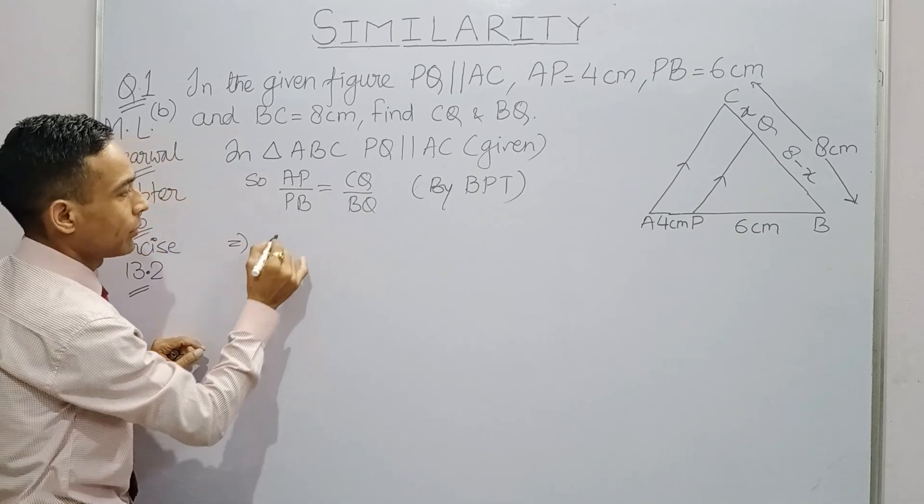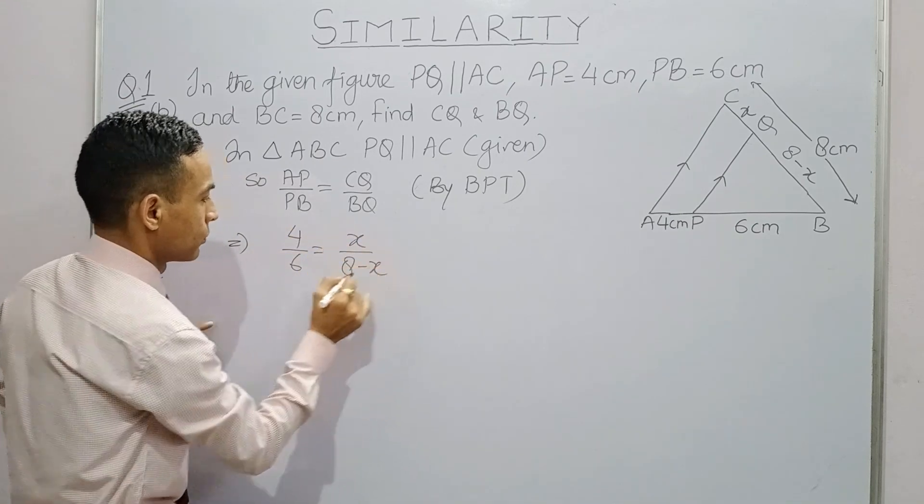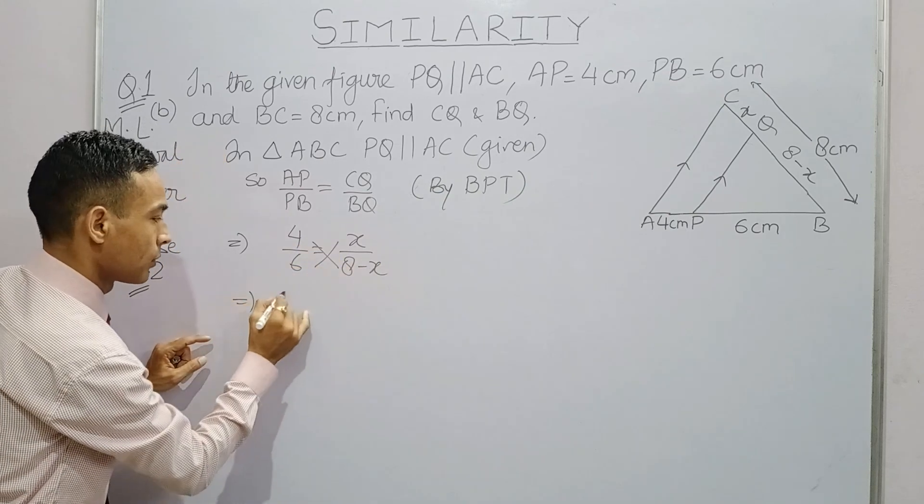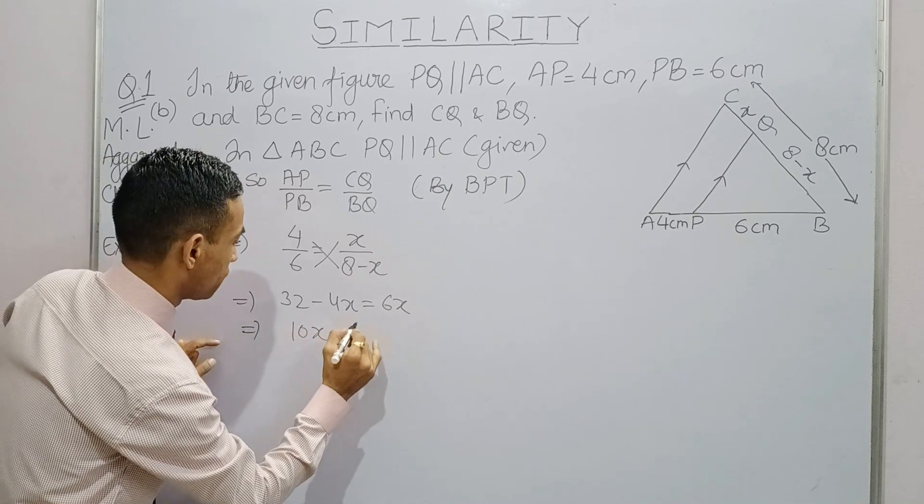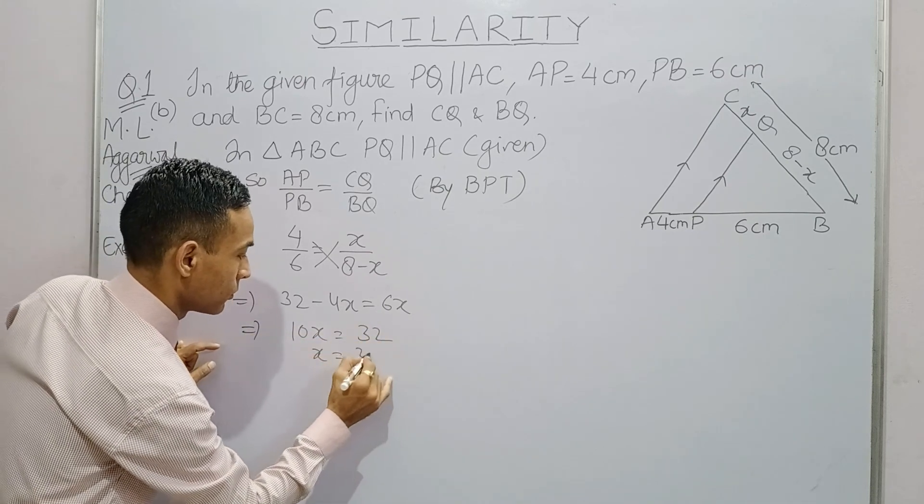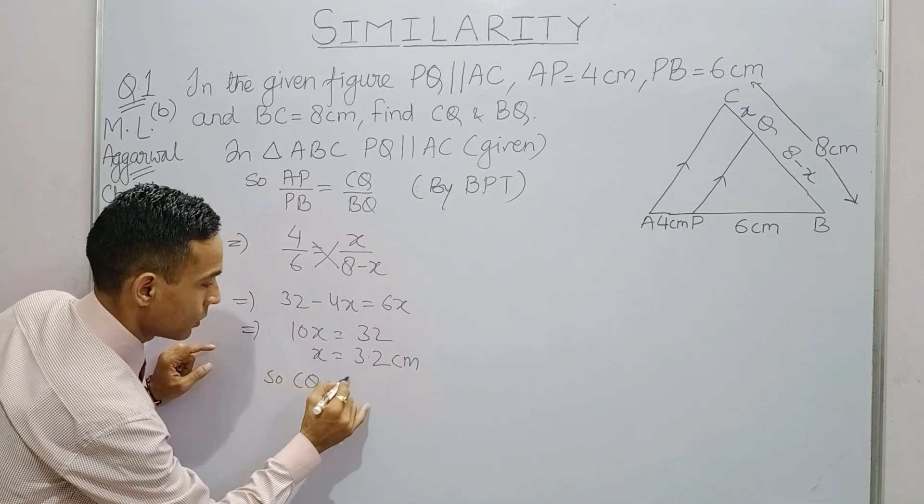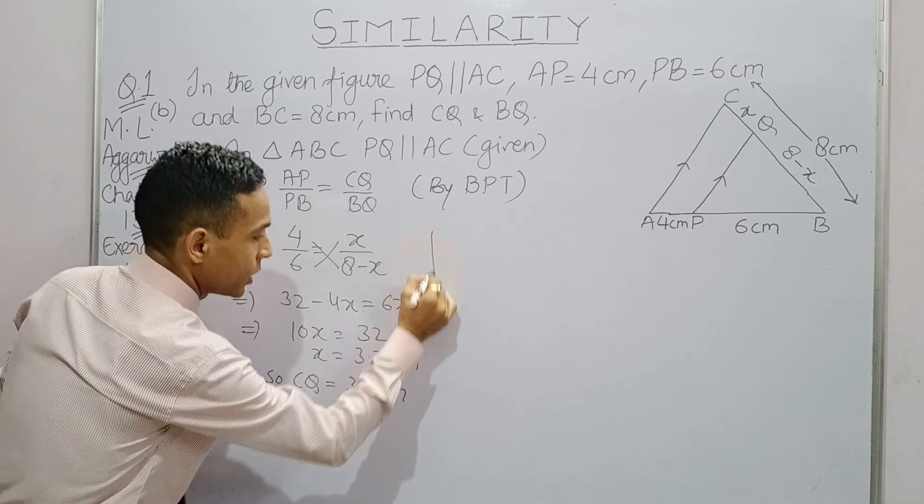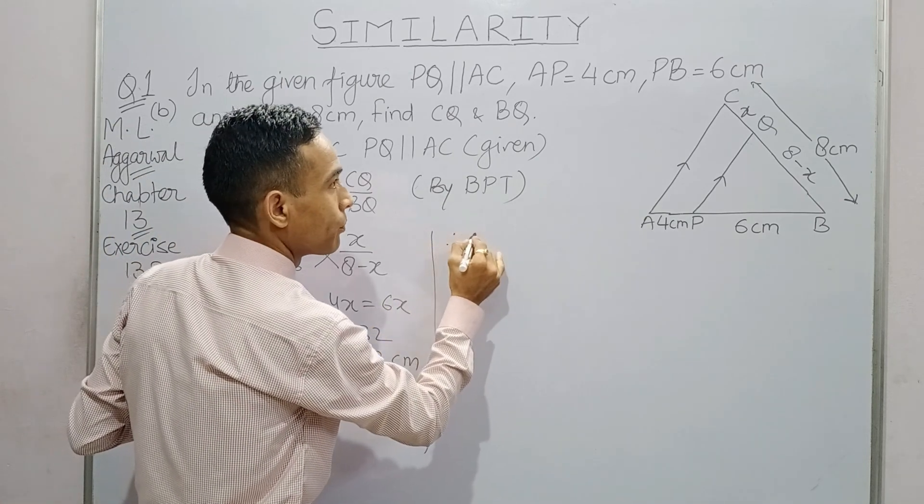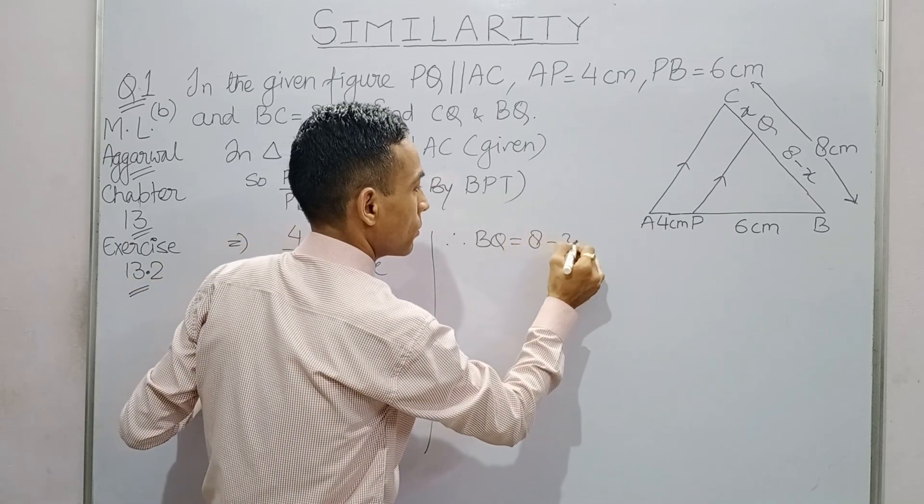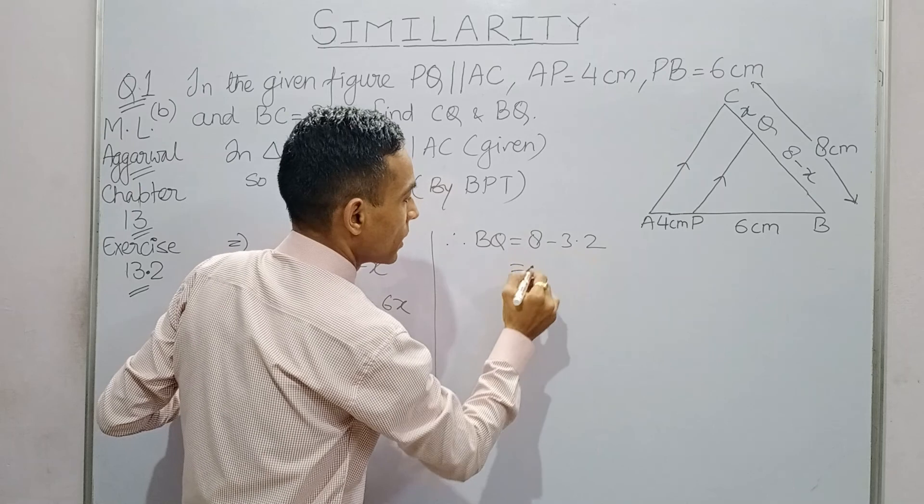Substitute the values and cross multiply. So CQ is equal to 3.2 cm.